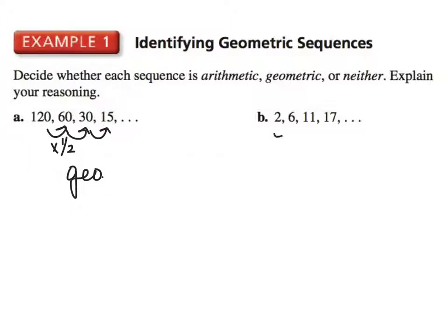In our next example, we add 4, then we add 5, then we add 6. This is actually neither, because you are not adding the same amount every time, and you are not multiplying each time. Therefore, this sequence represents neither arithmetic nor geometric.